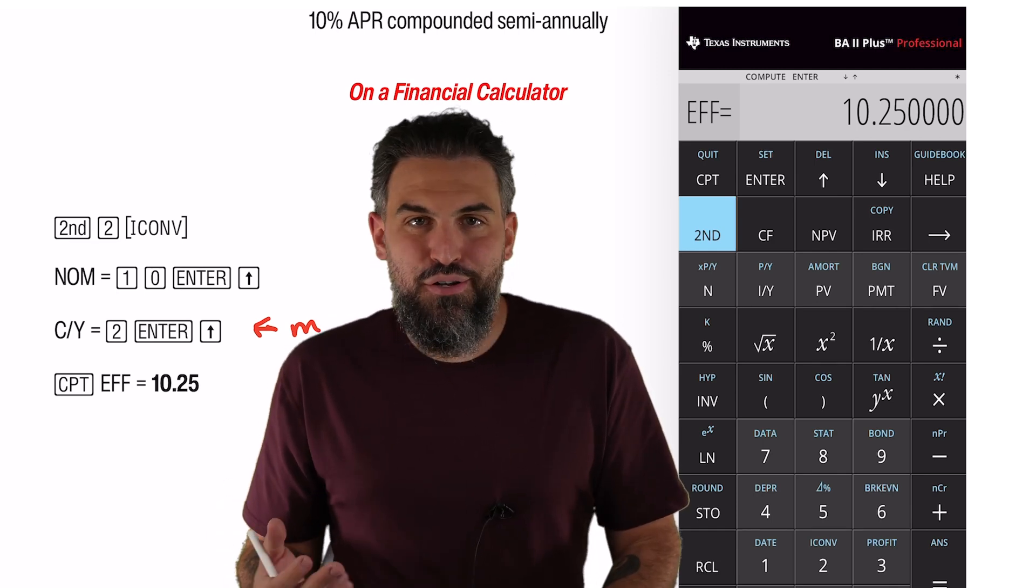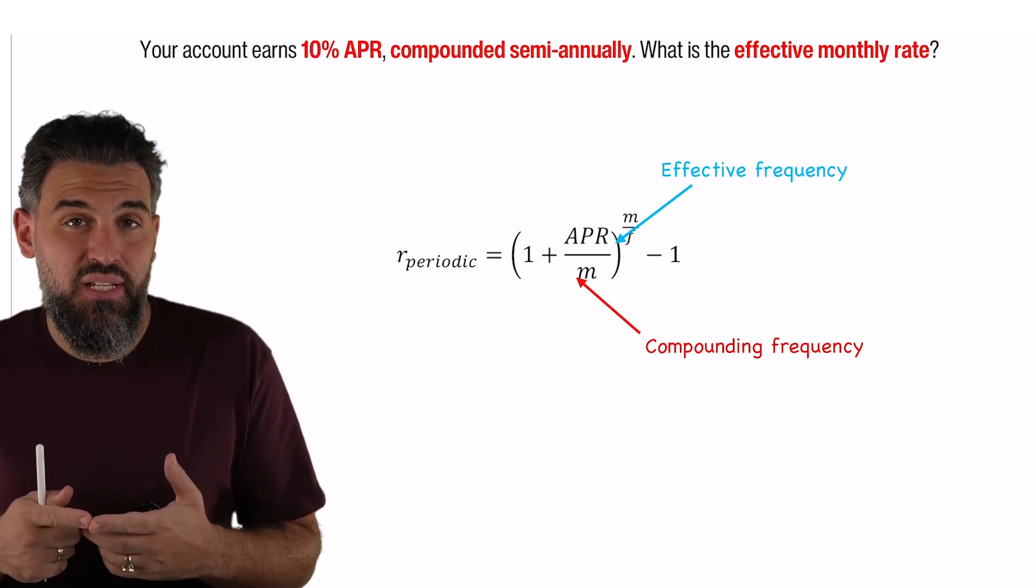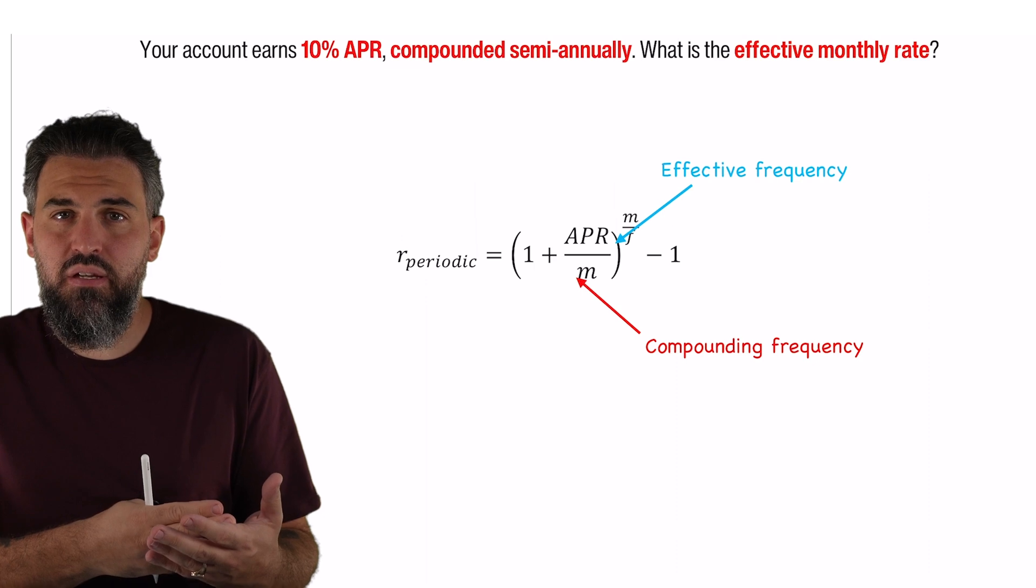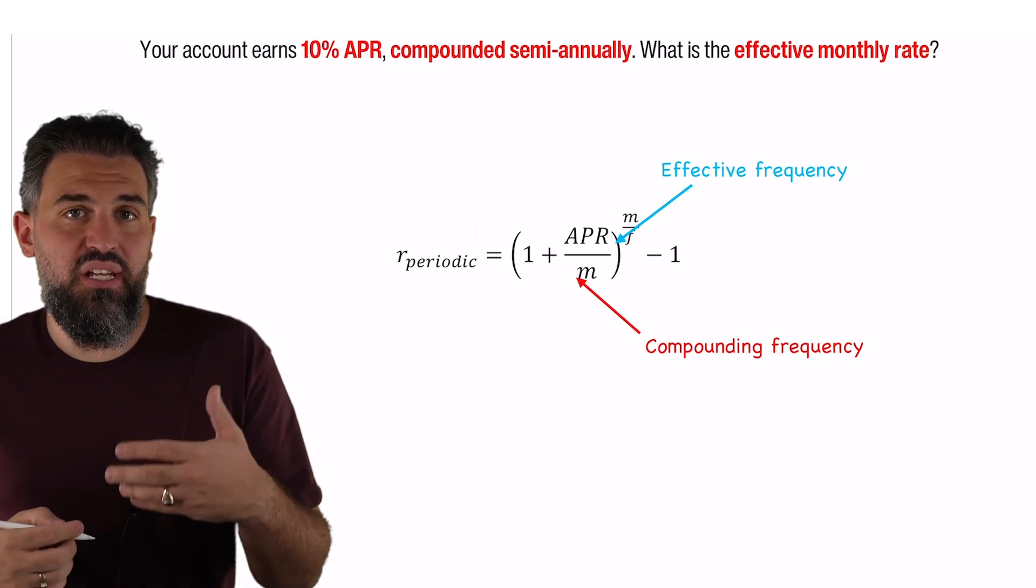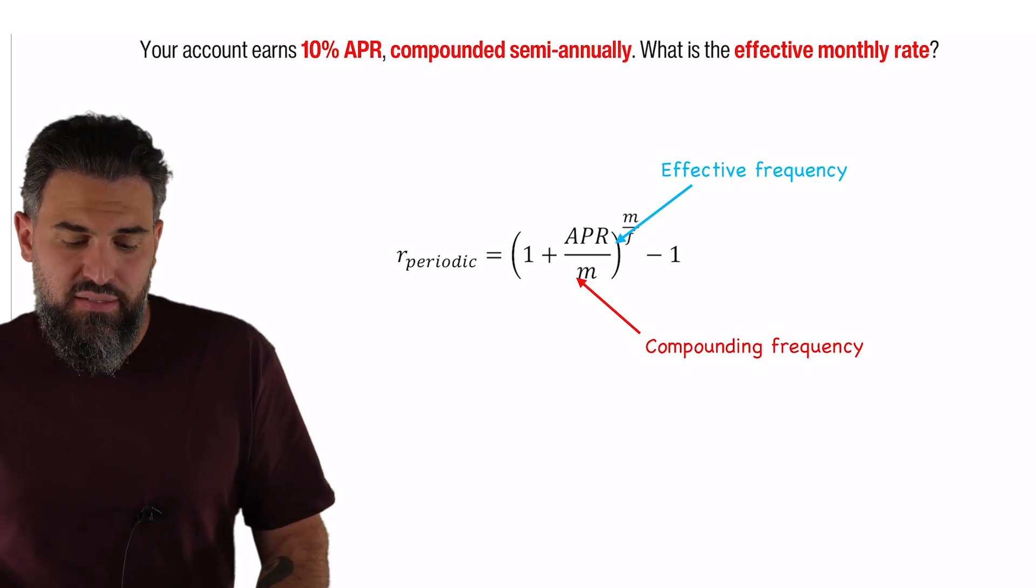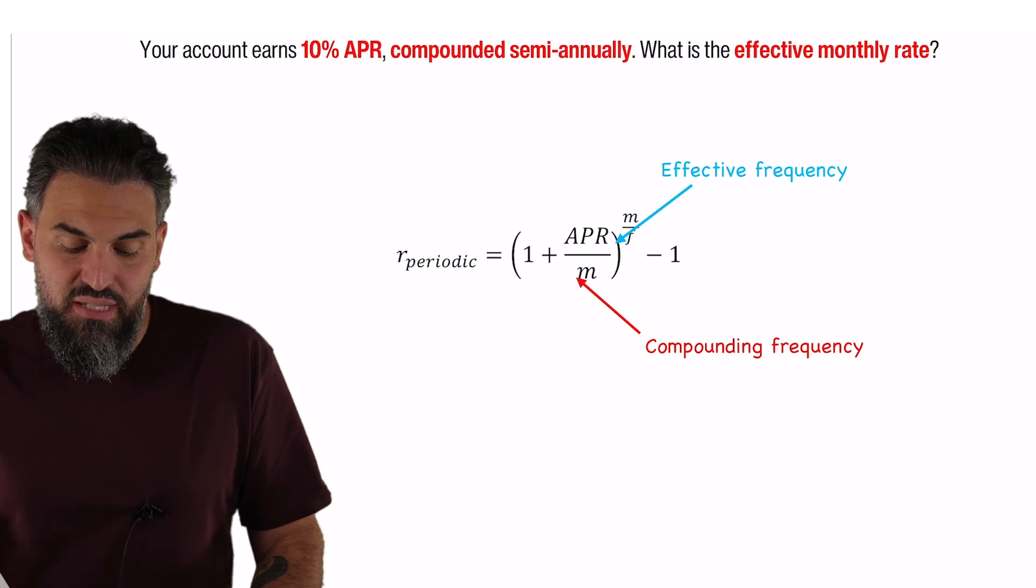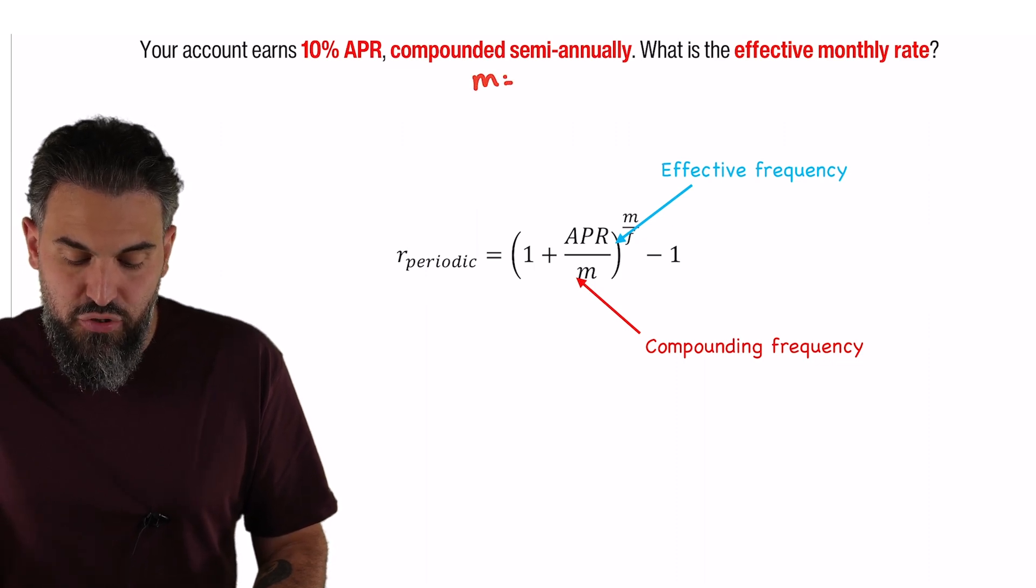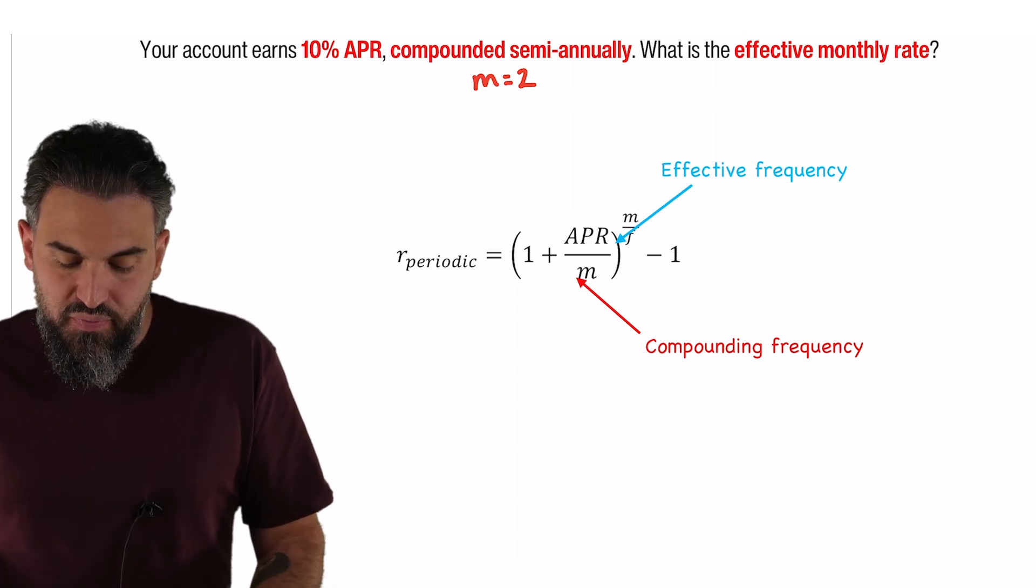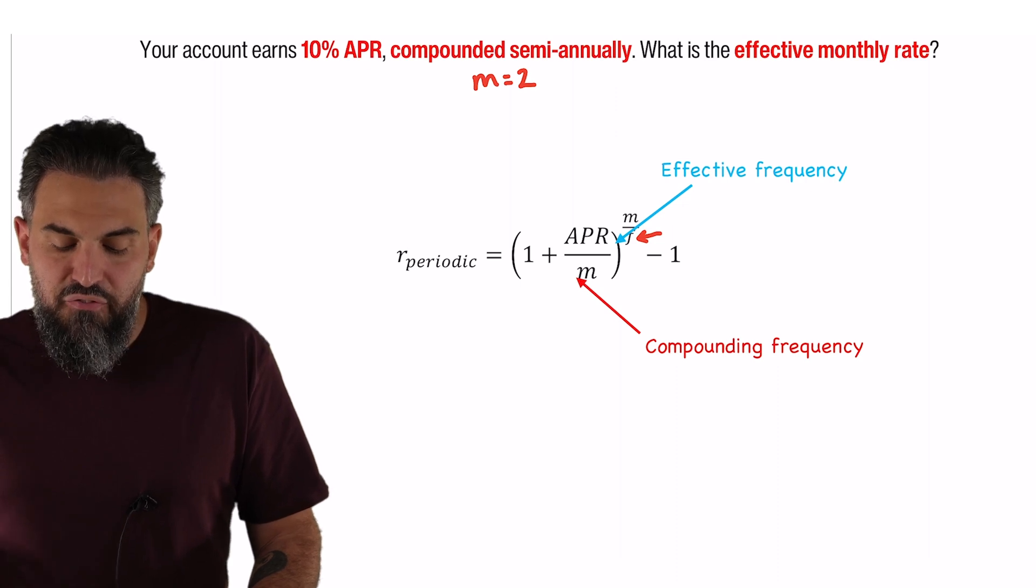Now earlier I said that an effective rate can be for any period. I showed you an effective annual rate, but you can also have effective monthly rates, effective quarterly rates, effective weekly rates. Here's the formula for that. So in this example it says your account earns 10% APR compounded semi-annually, so we've got an M of 2. What is the effective monthly rate? So we're going to introduce a new variable and that variable is F. You can see right there, it's kind of under the arrow. F is the effective frequency.